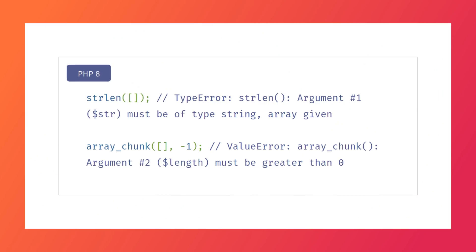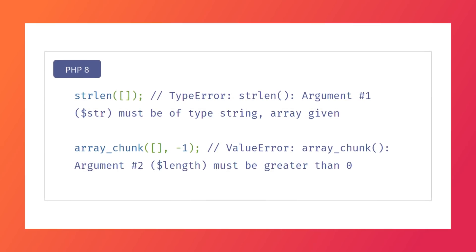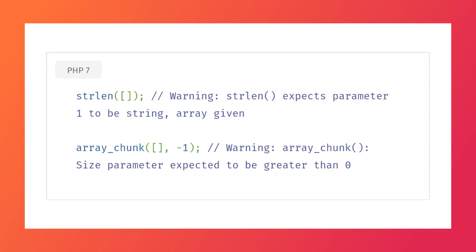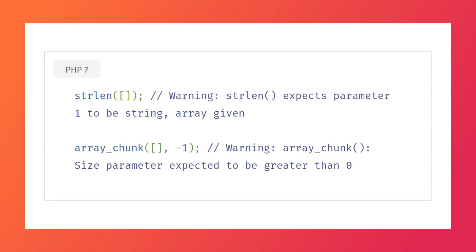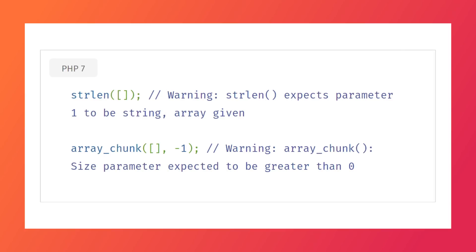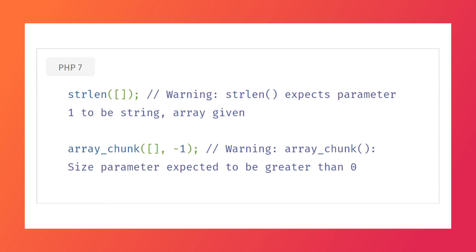Consistent errors for internal functions. This is actually really interesting because it used to be that if you supplied an invalid type as an argument to a PHP internal function, you'd get a warning instead of a type error. This has changed in PHP 8. For example, if you were to provide an empty array to strlen — which is a way of checking how long a string is — it would now throw a TypeError. Previously it would just throw a warning and potentially the script would just keep executing, and you'd have a null result and things could get wonky. Similarly, if you did array_chunk with a second parameter of negative one, it would now throw a ValueError where before it would just throw a warning.